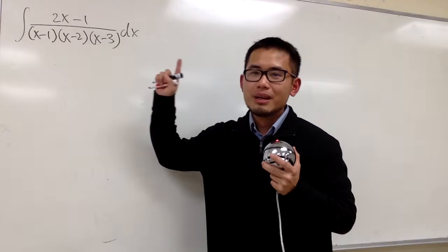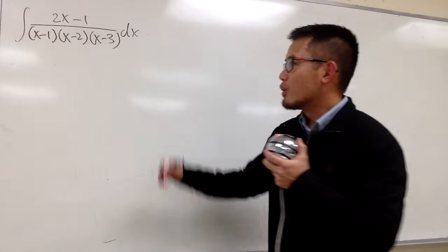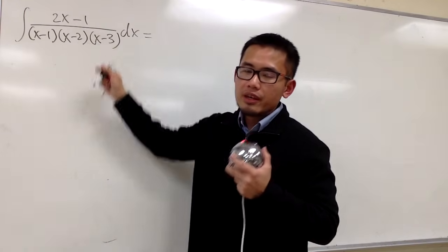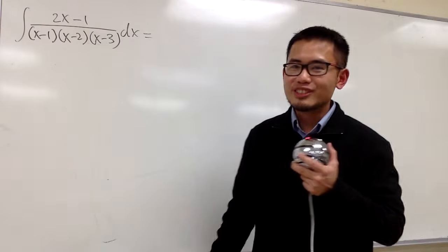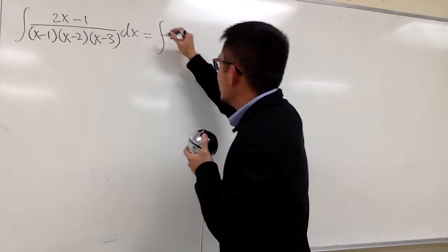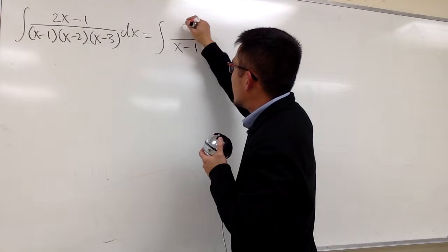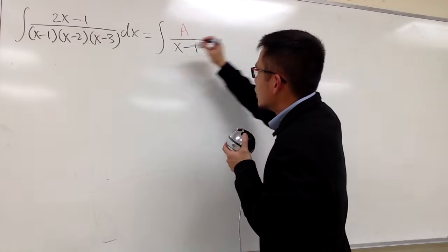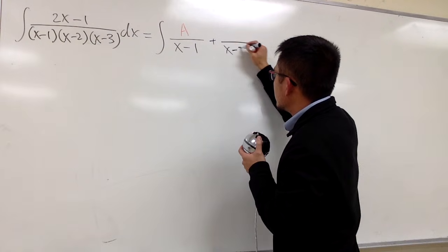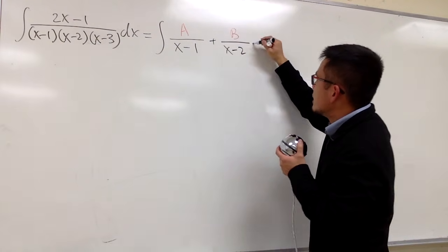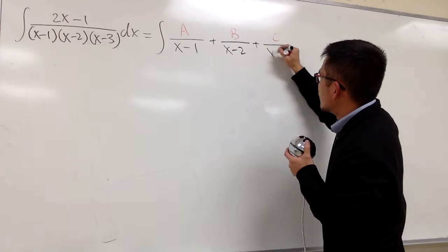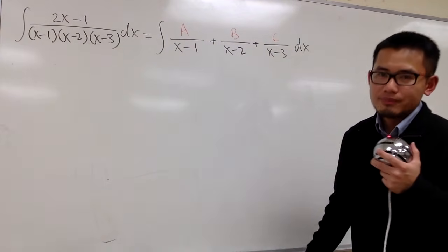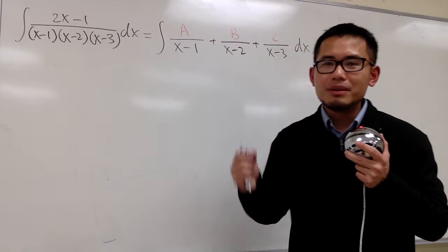Therefore, we can use partial fractions by the cover-up method. Let's set this up. We know this right here can become 3 little fractions. The first one has denominator x minus 1 with constant A on top. The second has denominator x minus 2 with B on top. And the last one is C over x minus 3 dx. Our goal is to find A, B, and C.